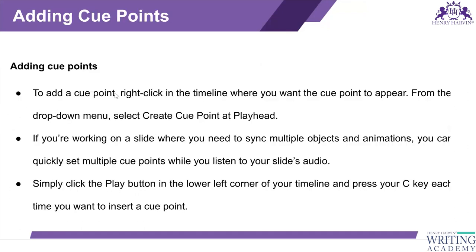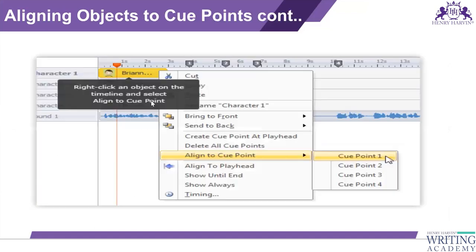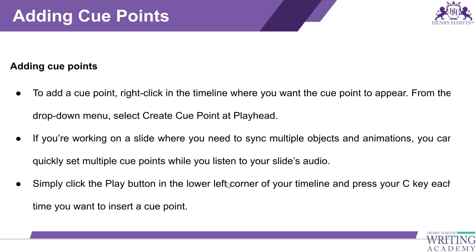To add a cue point, right-click on the timeline where you want the cue point to appear. You can create a cue point at the playhead. If you're working on a slide where you need to sync multiple objects and animations, you can quickly set multiple cue points while you listen to your slide audio.